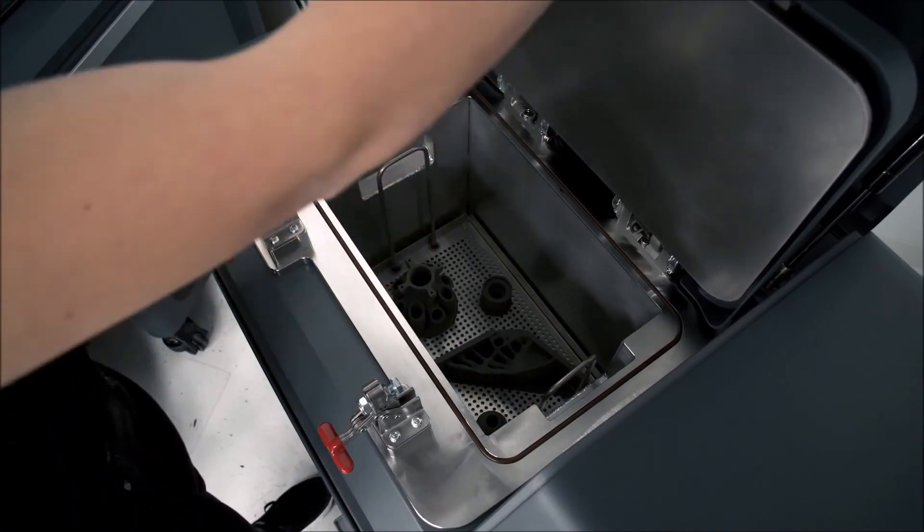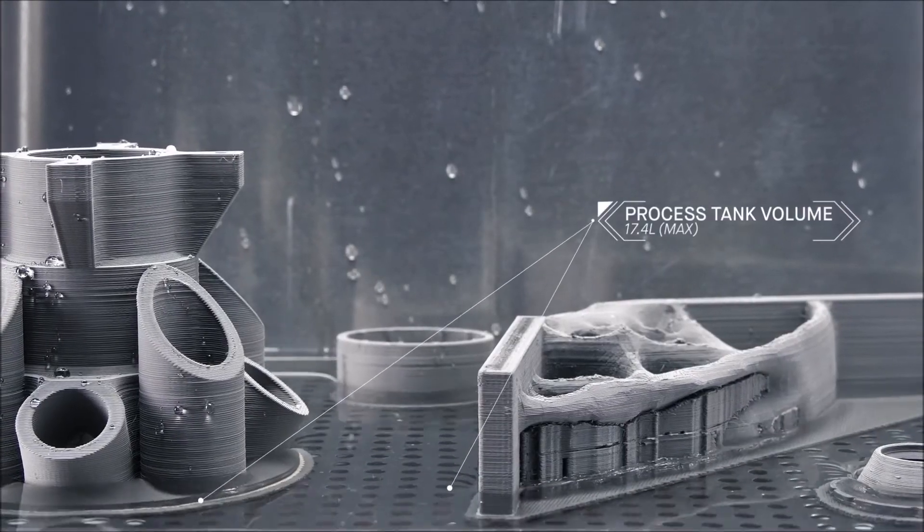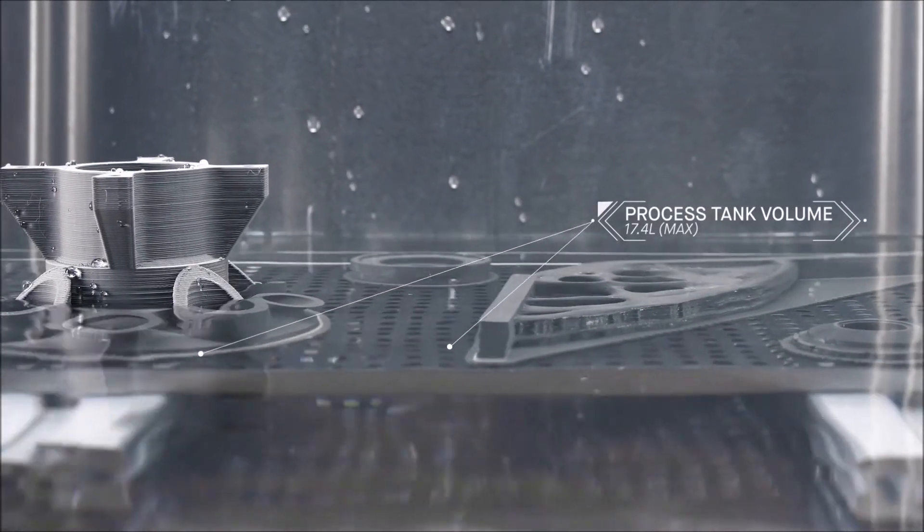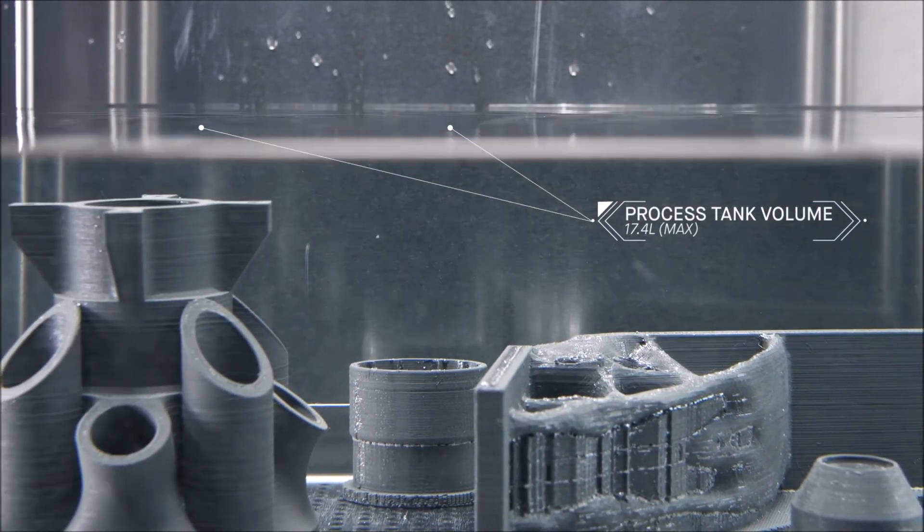In the debinder, the parts are immersed in fluid. As primary binder is removed, an open pore structure is formed throughout the part in preparation for sintering.